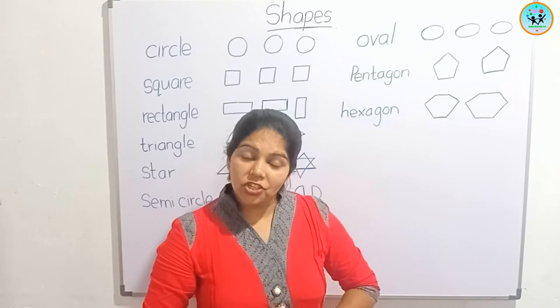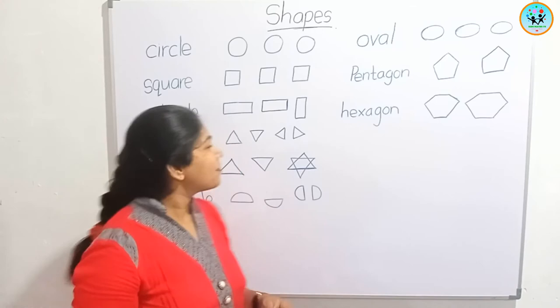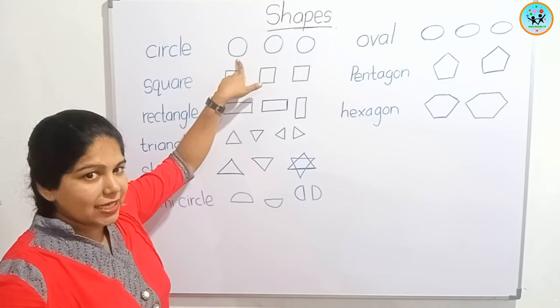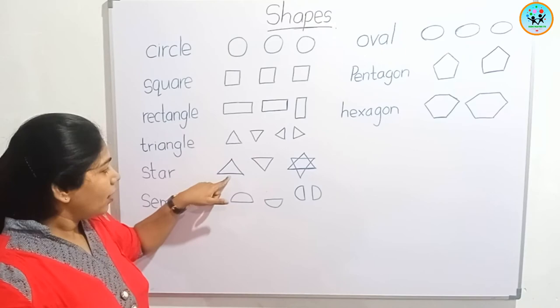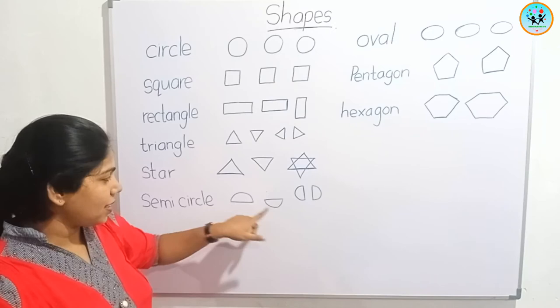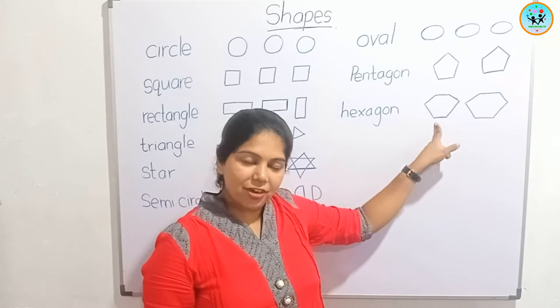Students, today you learnt different kinds of shapes, examples of those shapes, and how to draw them. Let's remember: circle, square, rectangle, triangle, star, semicircle, oval, pentagon, and hexagon.